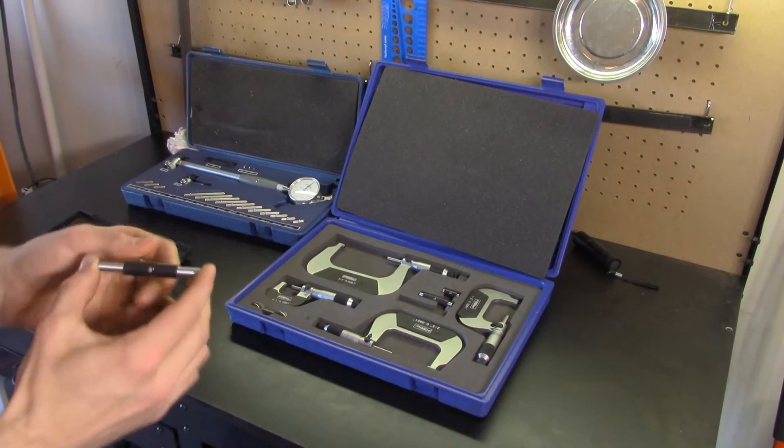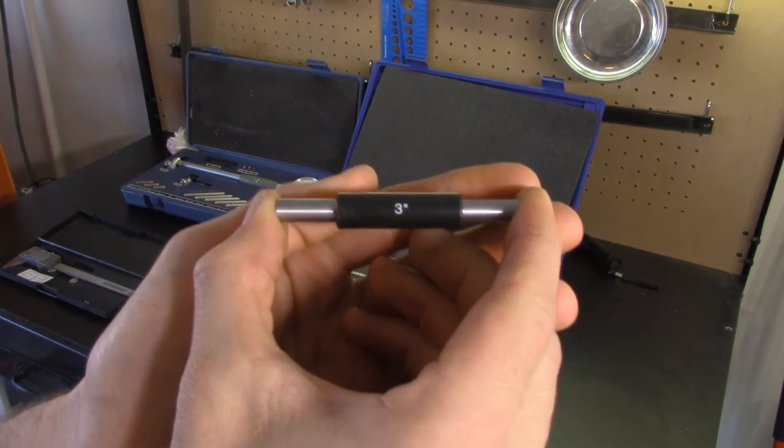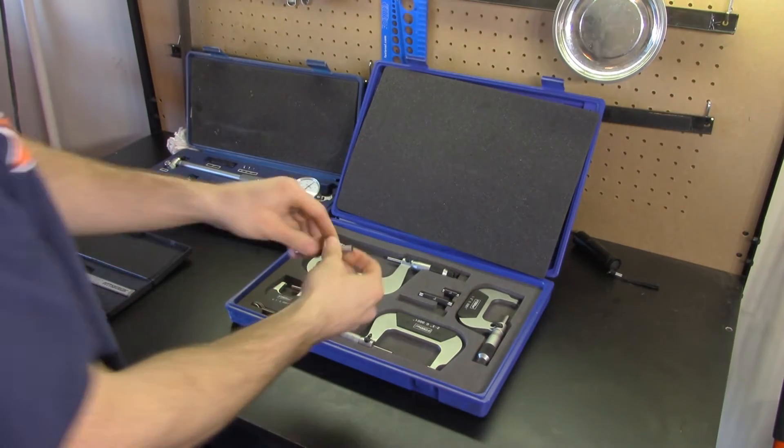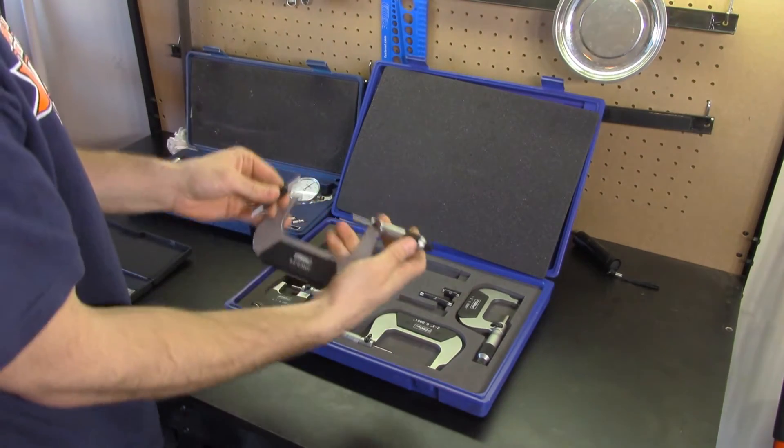These are measuring standards. They contain a known distance, and in this case it's three inches, so that you can zero your micrometers as well as other measuring tools to ensure their accuracy.